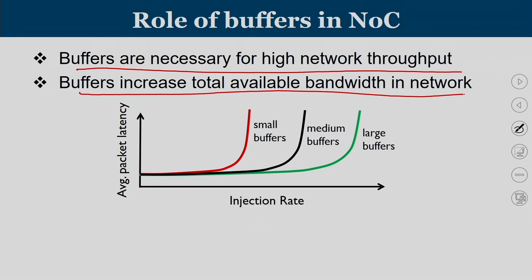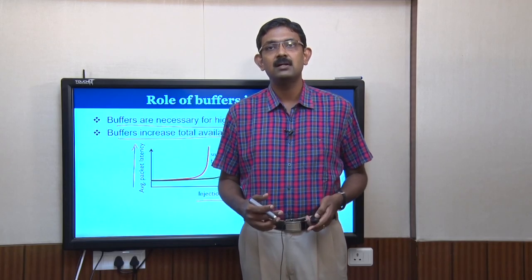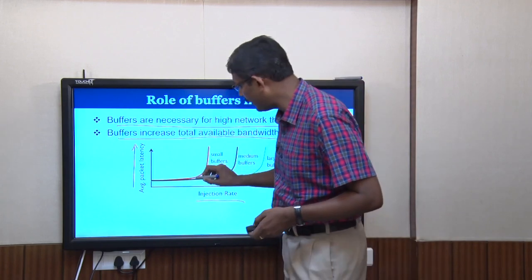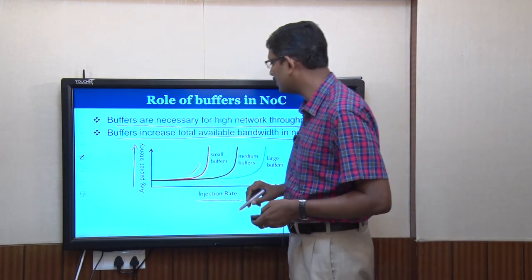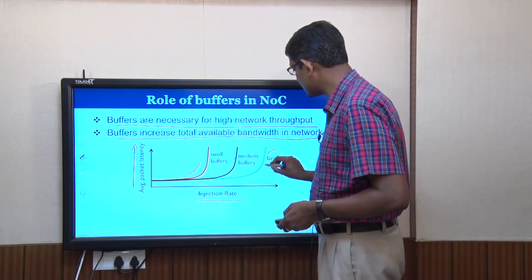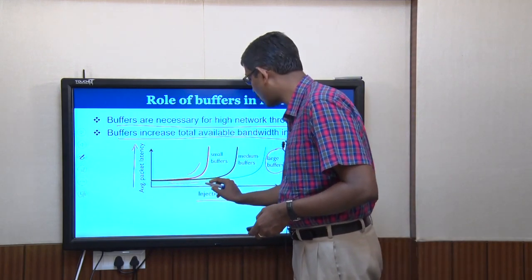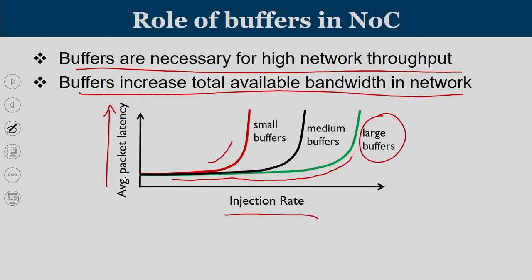This graph shows the x-axis as injection rate — the number of packets entering the network per cycle — and the y-axis as average packet latency. When you increase the injection rate, the number of packets entering the router increases, load increases, and packets compete with each other. Beyond a point, latency also increases. When you have a large number of buffers, shown by the green chart, even if you increase packet injection rate, you do not see any increase in latency initially, but after some time latency increases.